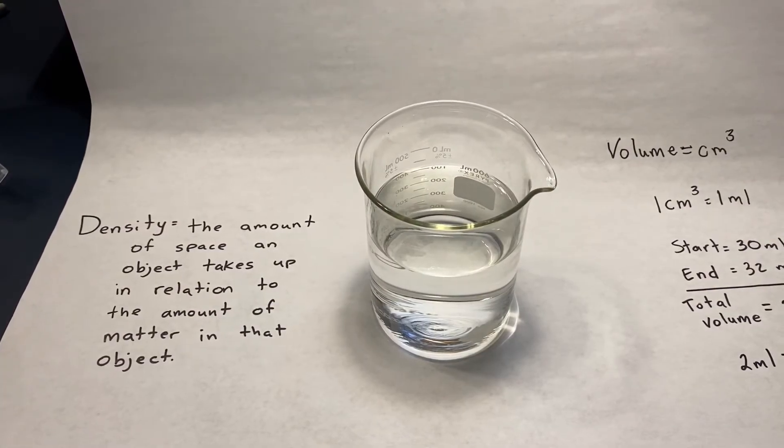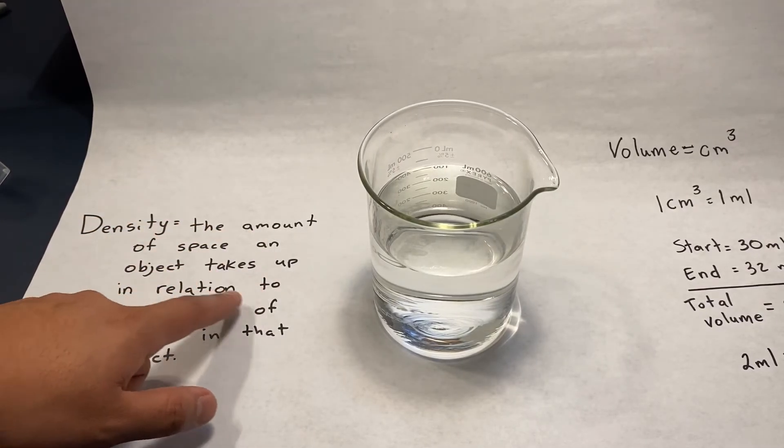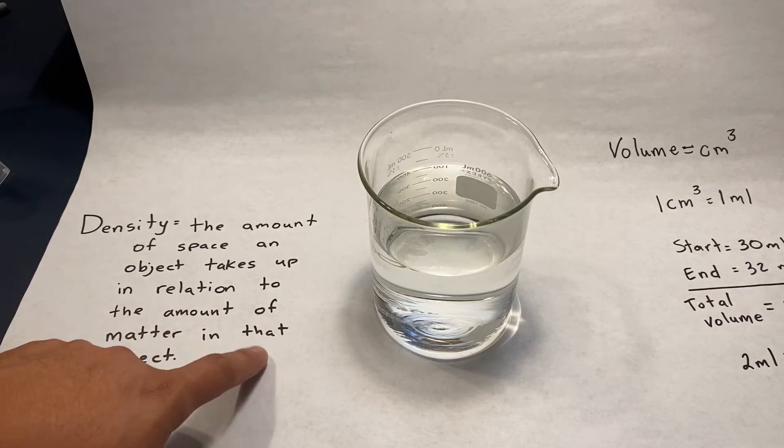Well, the final thing that we're going to talk about is density. So density is going to be the amount of space an object takes up in relation to the amount of matter in that object.